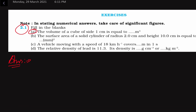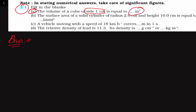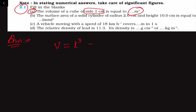We are given the side of a cube as 1 centimeter, and we have to find out the volume in meter cube. So we have to first know the formula for volume. Volume of a cube V is equal to length cubed, or we can say length into length into length.